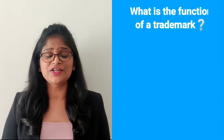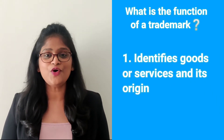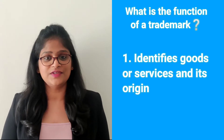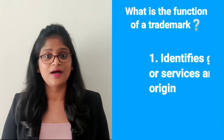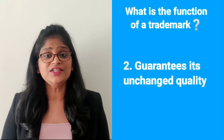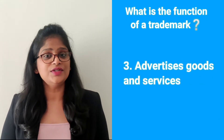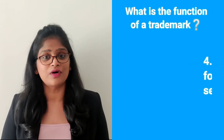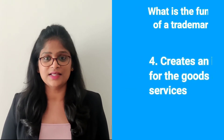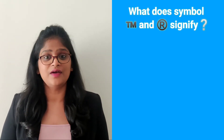What is the function of a trademark? A trademark performs four functions: number one, it identifies the goods or services and their origin; number two, it guarantees its unchanged quality; number three, it advertises the goods and services; number four, it creates an image for the goods and services.